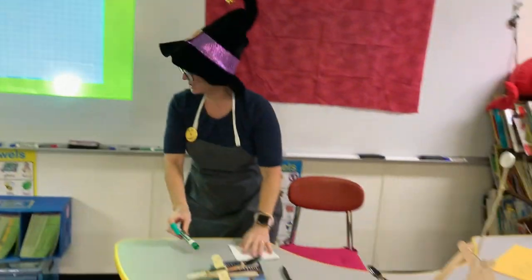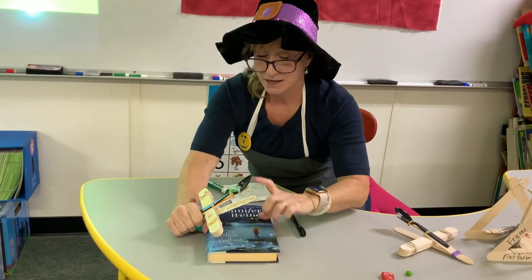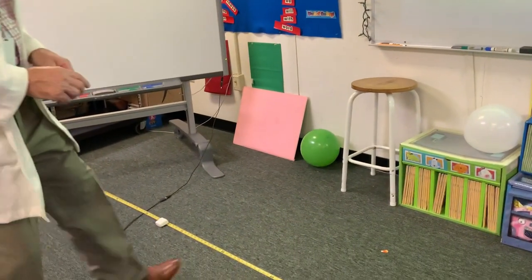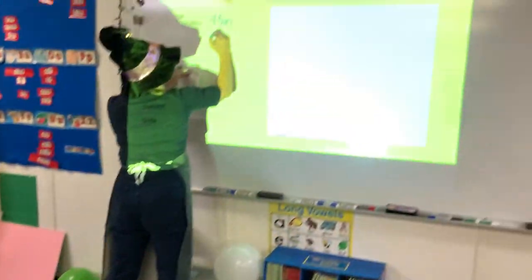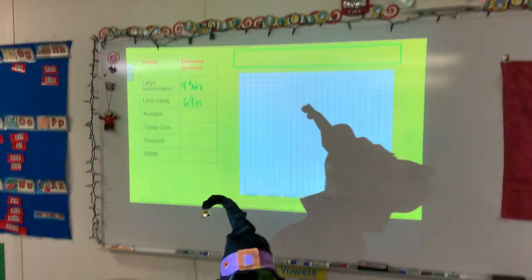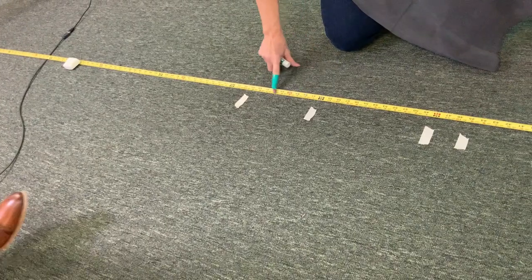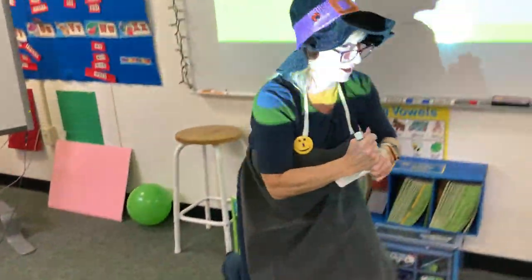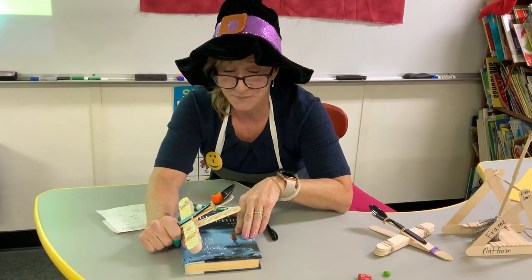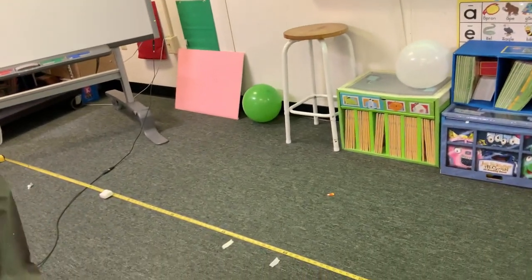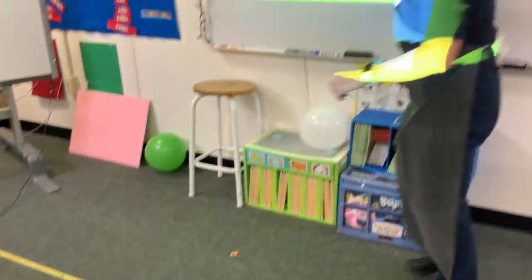Next is a little round lime candy. Does its shape make it go faster or higher? The lime candy went 69 inches. The black numbers on the measuring tape are inches; the numbers on top represent feet. Next are the little pumpkin candies — they also went 69 inches, exactly the same distance.